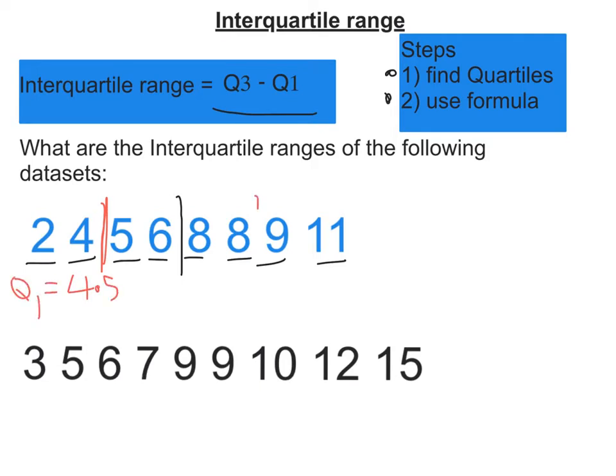And the upper quartile is going to go in between there. Split it into two halves. And that's going to be 8.5.